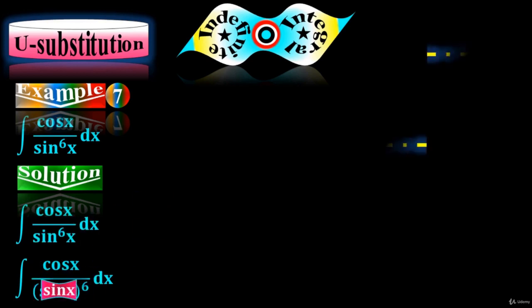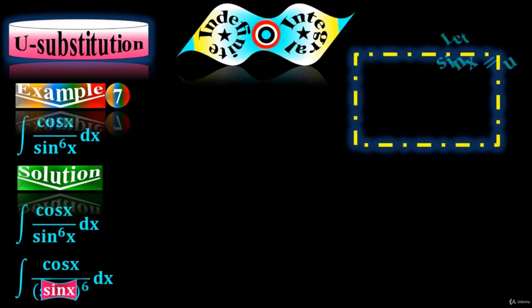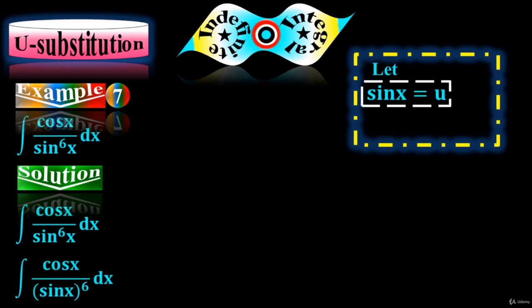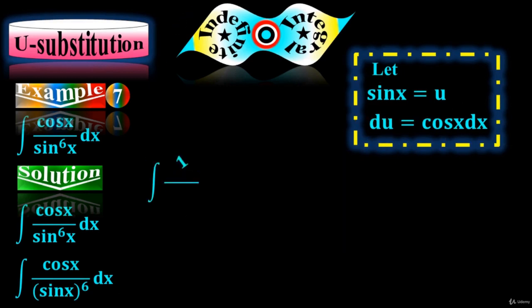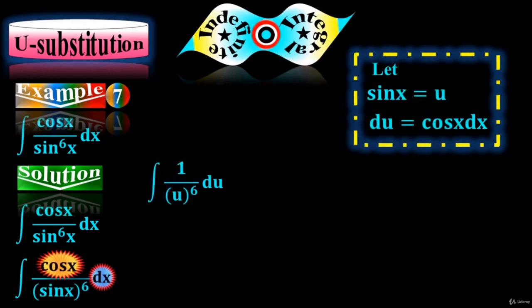Now let's suppose sin(x) equals u. Take the derivative on both sides. We have du equals cos(x) dx. Replace sin(x) by u and cos(x) dx by du.